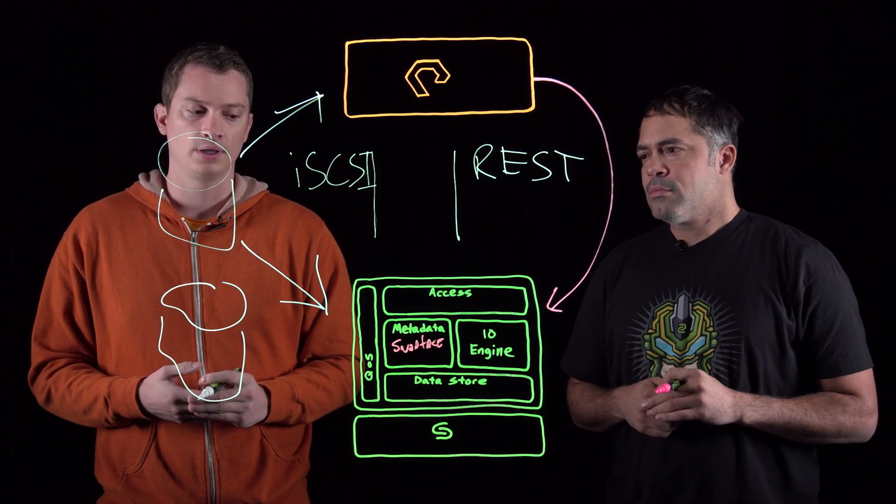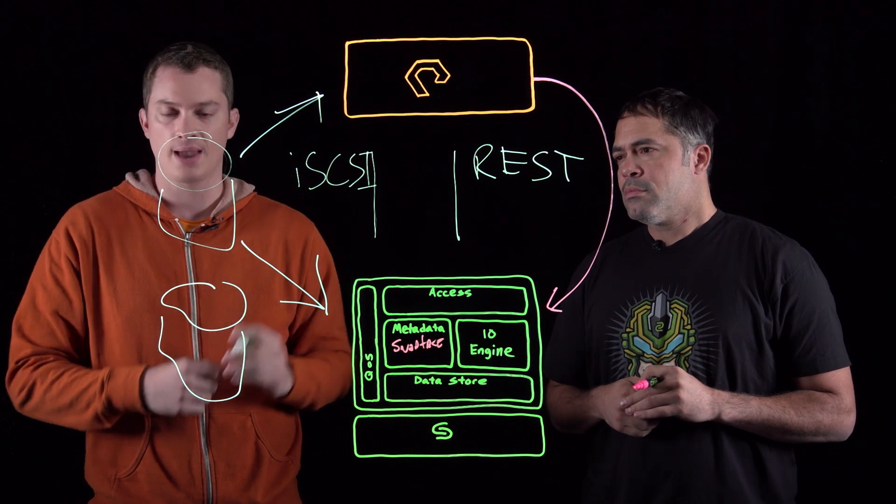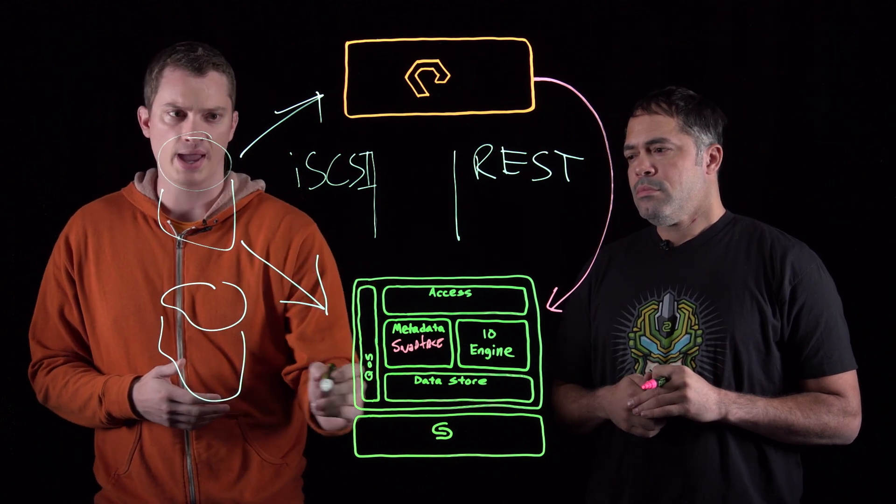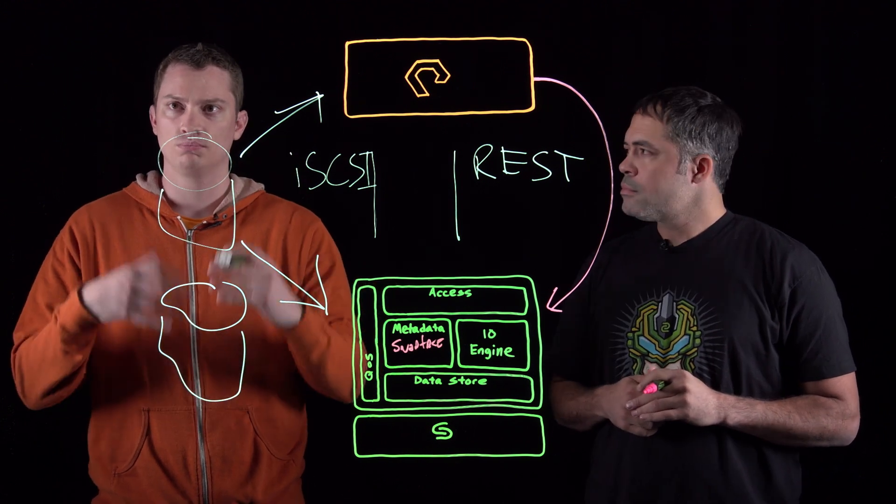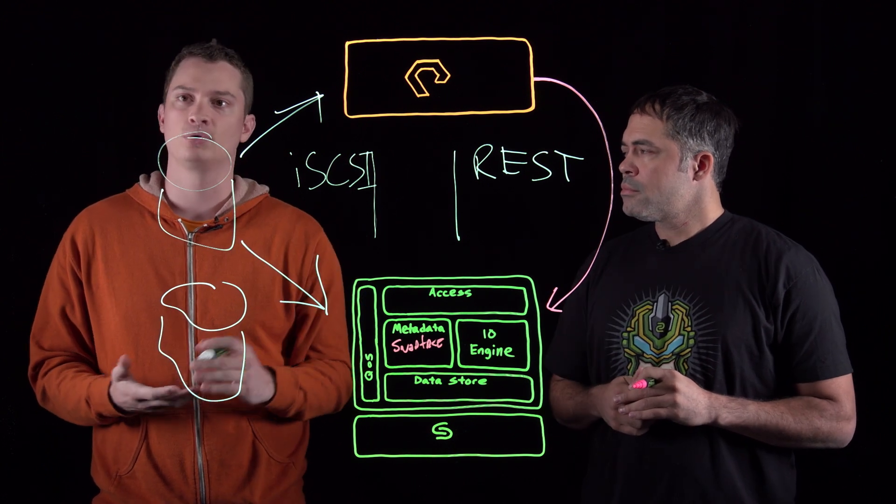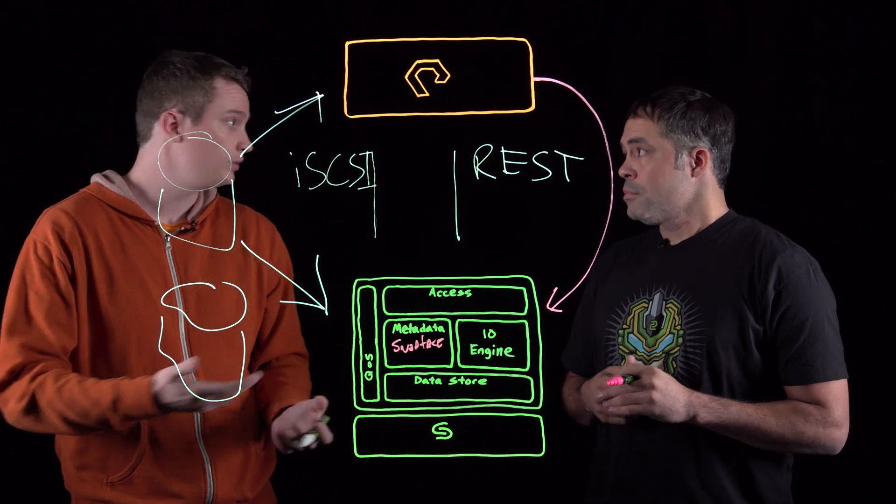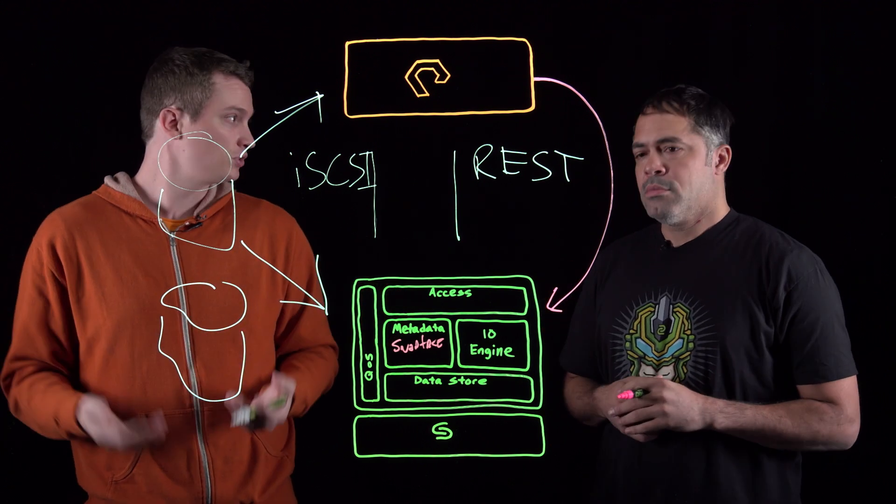So, the data is going to be stored. You choose a snapshot you want to restore from. It'll send it back through the iSCSI connection to this volume, putting it in that point in time you want to recover to and then it'll connect it to the proper host. And this could be a VMware environment. This could be Hyper-V, whatever.